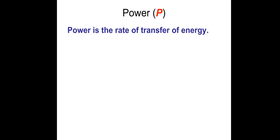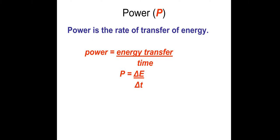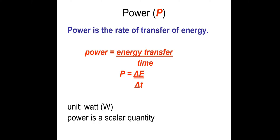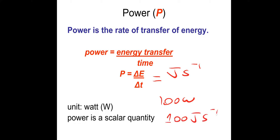Power is the rate of transfer of energy. As an equation, it's power equals energy divided by time. It's measured in watts, and it's a scalar quantity. The other unit for power is energy divided by time, so joules per second. For example, 100 watts is equivalent to 100 joules per second.